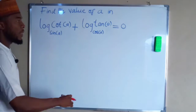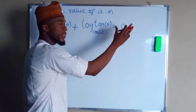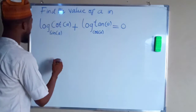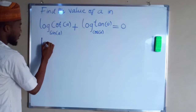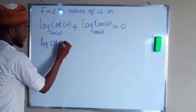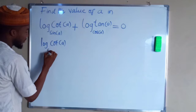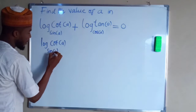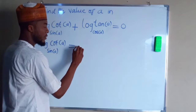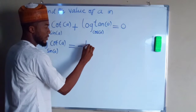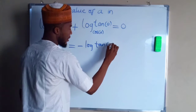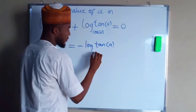First of all, let us take this term to the right-hand side. By taking it to the right-hand side, it is going to become negative. So we have log of cotangent A with the base of sine A on the left-hand side, and on the right-hand side we are going to have negative log of tangent A with the base of cos A.